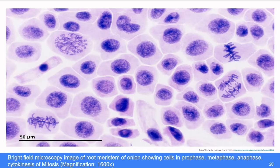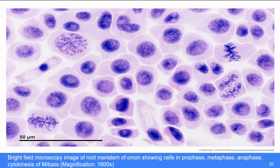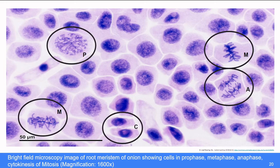Here, you can see the bright field microscopy image of root meristem of onion showing cells in prophase, metaphase, anaphase, and cytokinesis of mitosis. This is the prophase, these two are metaphase, this is anaphase and this one is cytokinesis.